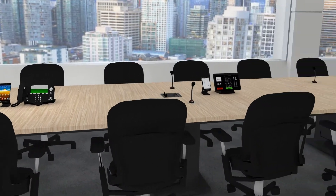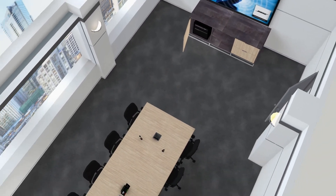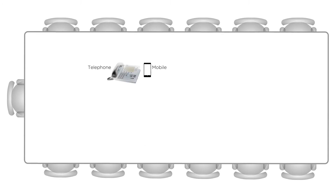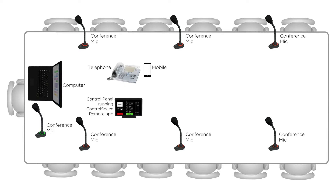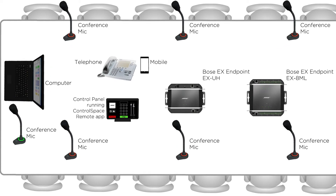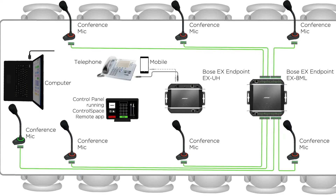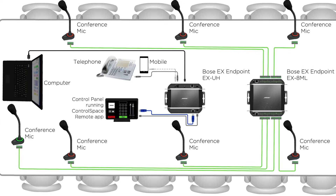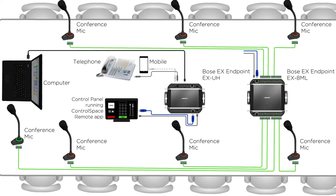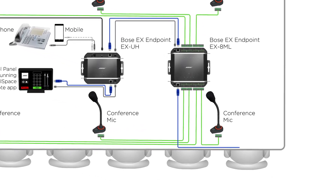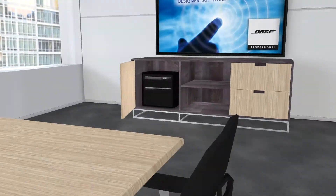To explain how ControlSpace EX endpoints simplify the installation process, let's view it from this top-view system diagram. Our table devices are a desktop VoIP phone and smartphone, seven conference mics, a bring-your-own laptop, and a system room controller. This system requires an EX8ML and EXUH endpoint mounted under the table. The seven conference microphones wire into the EX8ML; the telephone and mobile device connect to the EXUH endpoint; the laptop connects via USB. The system control panel connects to the EXUH network and power ports. You can daisy-chain the two endpoints together, so all table devices are connected and only one network cable runs from the table to the equipment rack.